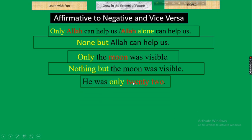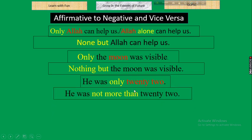When 'only' indicates a number, digit, or age, we take 'not more than' in place of 'only.' So instead of 'only' we use 'not more than' when only indicates a number, digit, or age.